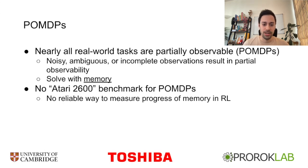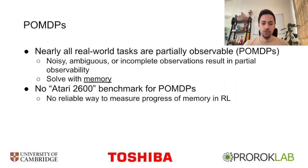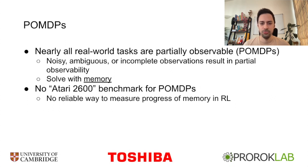Nearly all real-world tasks are partially observable MDPs, or POMDPs. If there's any sort of noise, ambiguity, or missing information from an observation, then your process is no longer an MDP — it's a POMDP. In RL, we solve POMDPs using memory. But there are no comprehensive POMDP benchmarks, and so there's not really a good way to measure the progress of memory in reinforcement learning.